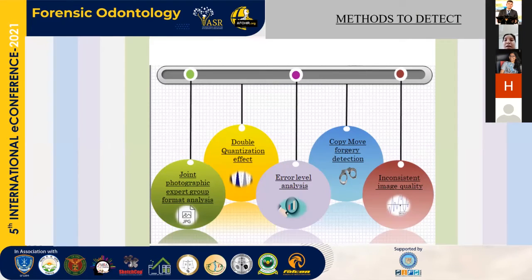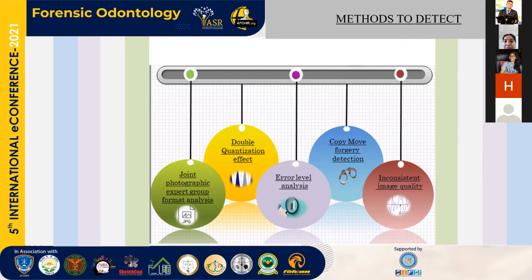What are the methods to detect fraudulence in digital imaging? The methods include JPEG double quantization effect, error level analysis, copy-move forgery detection, and inconsistent image quality.